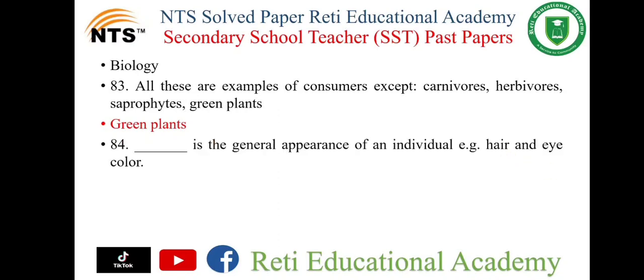Question number 84: Dash is the general appearance of an individual, for example hair and eye color. The correct answer is phenotype — phenotype is the general appearance of an individual.